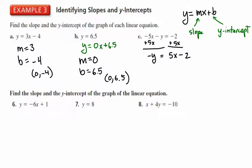We're not done yet because we can't leave it as negative y. I multiply everything by negative 1. When I multiply everything by negative 1, all signs change. Negative 1 times negative y is y. Negative 1 times 5x is negative 5x. Negative 1 times negative 2 is positive 2.